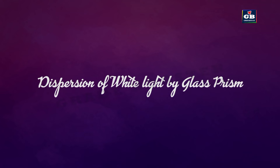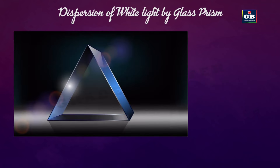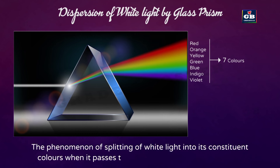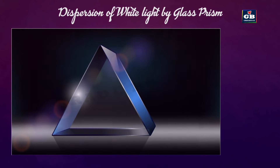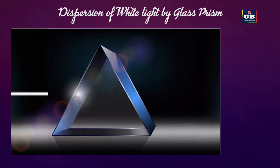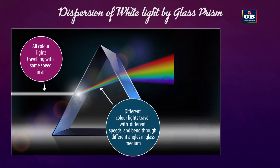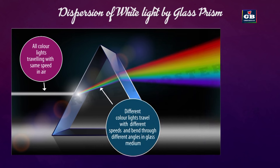Dispersion of white light by a glass prism: if we pass white light through a prism, it splits into seven colors — this is called dispersion of light. The phenomenon of splitting of white light into its constituent colors when it passes through a prism is called dispersion. Light rays of different colors travel with the same speed in vacuum and air, so we do not see colors separately. But in other mediums, they travel with different speeds and bend through different angles, causing dispersion.